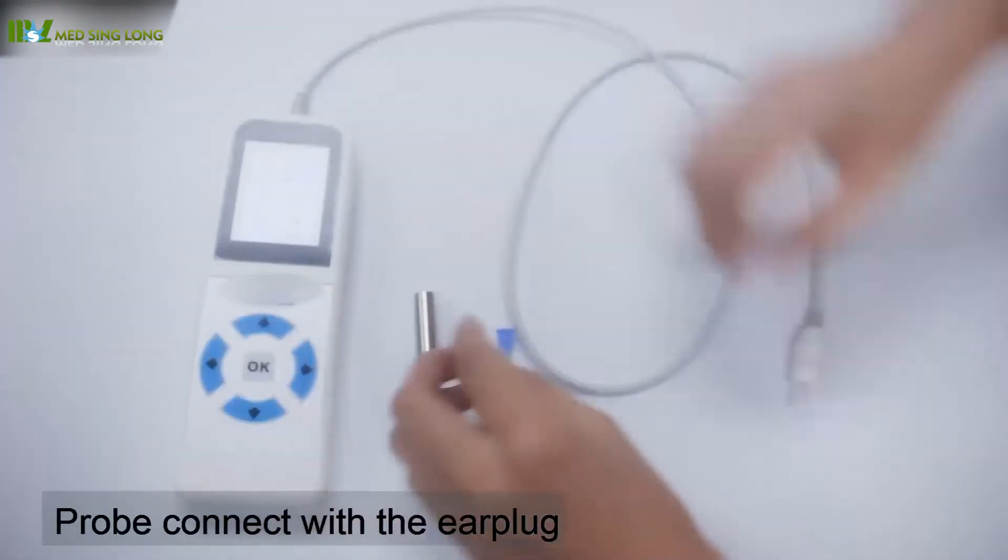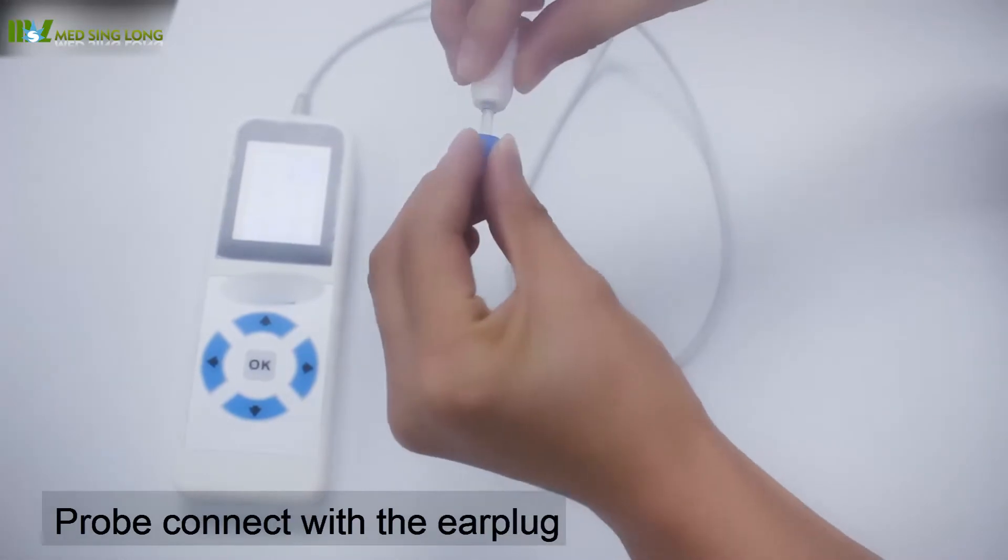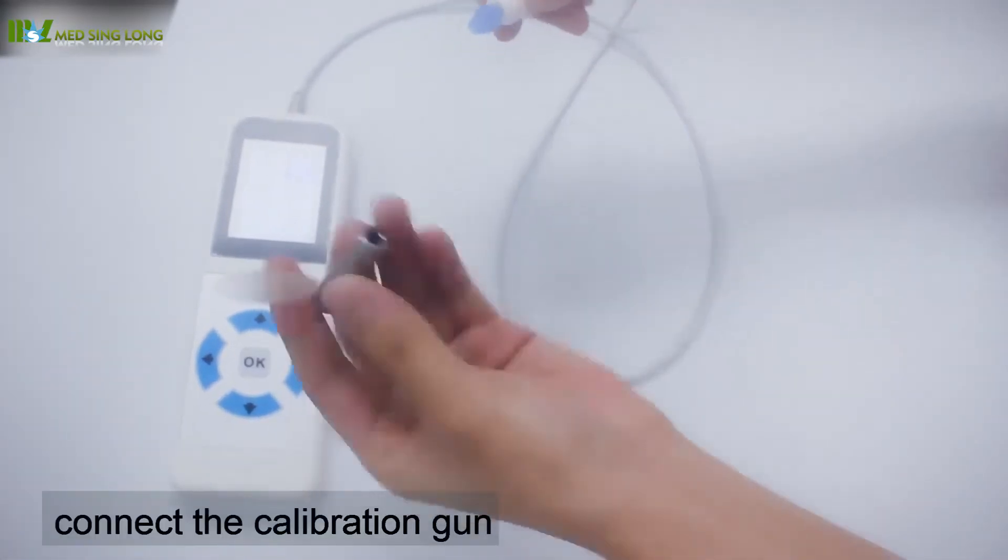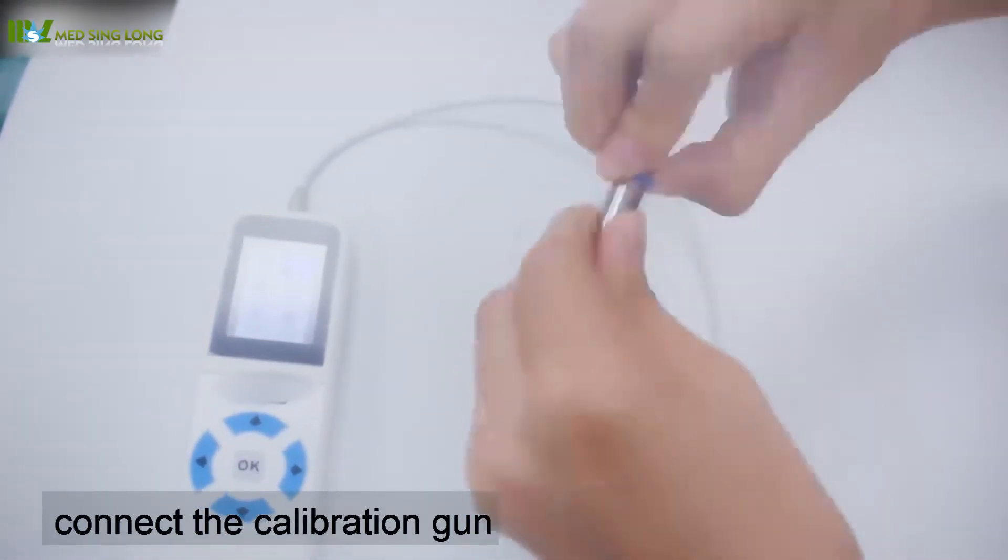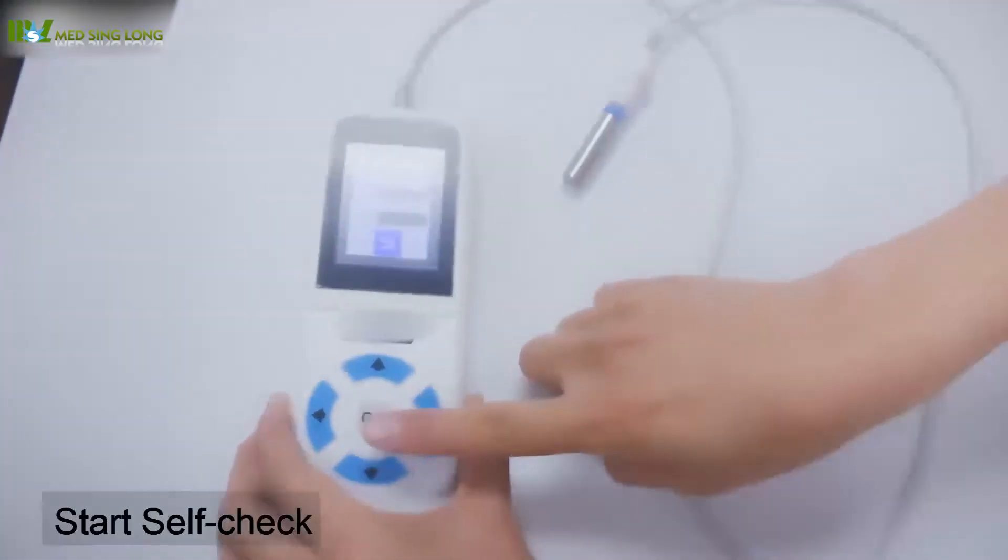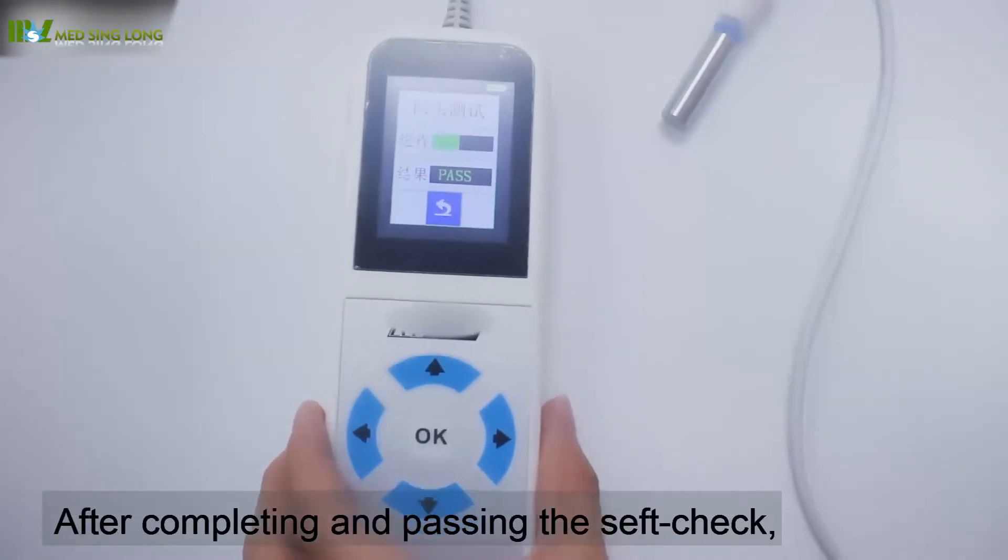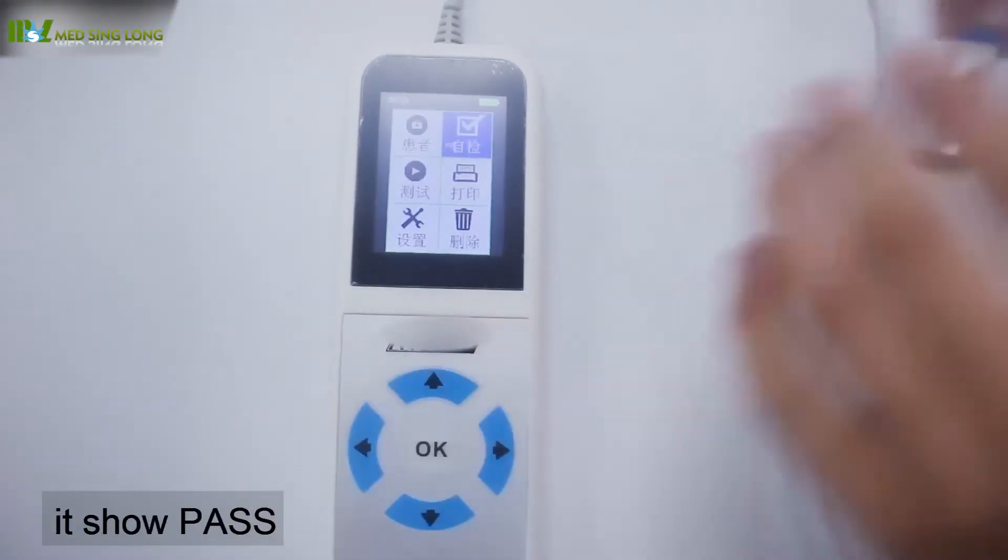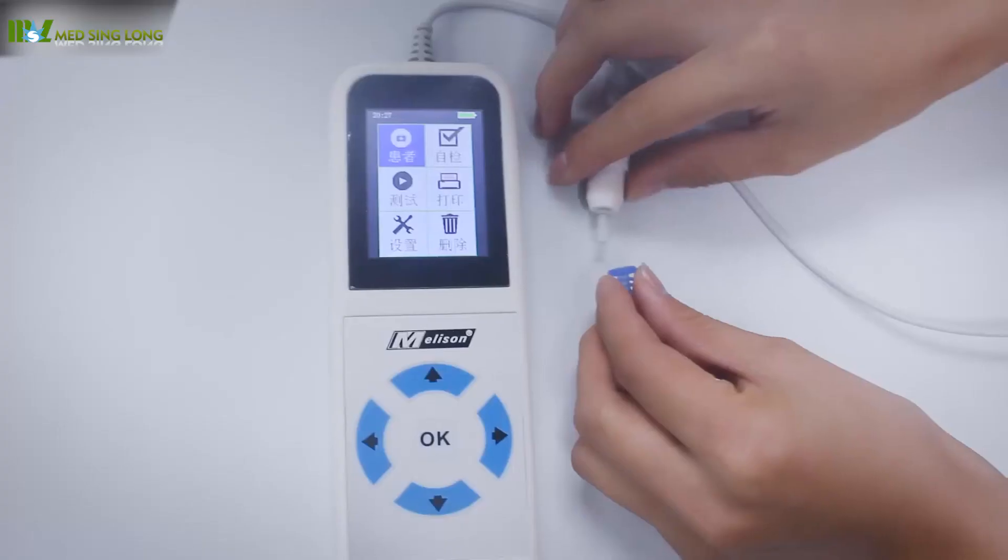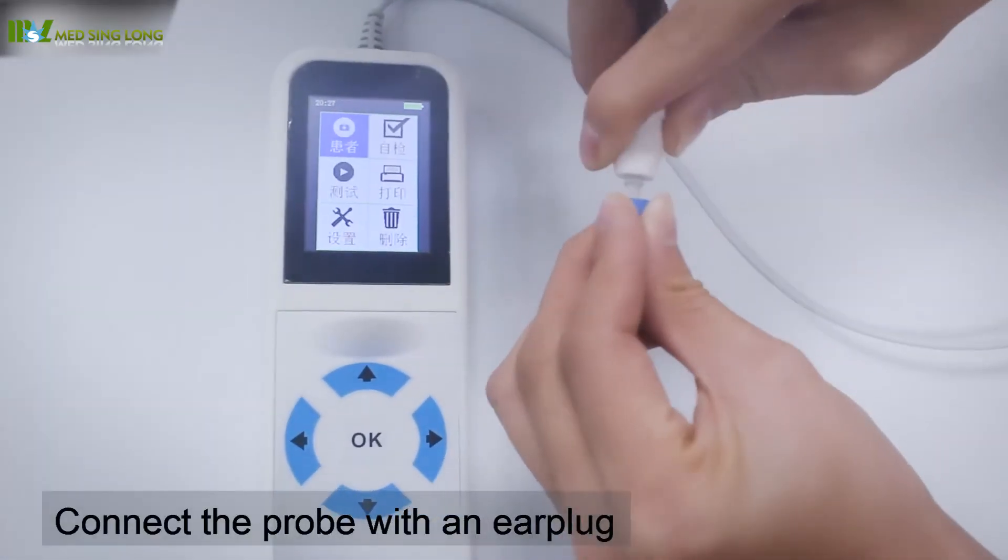Connect the probe with the ear plug, then connect the calibration gun. Start the self-check. After completing and passing the safety check, enter the tester number and connect the probe.